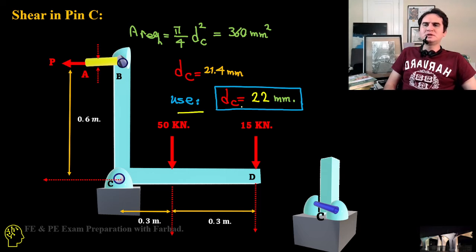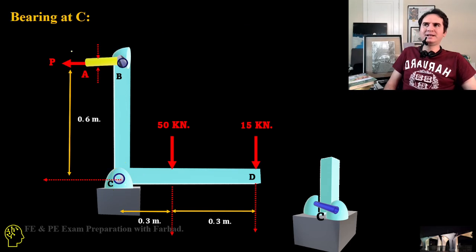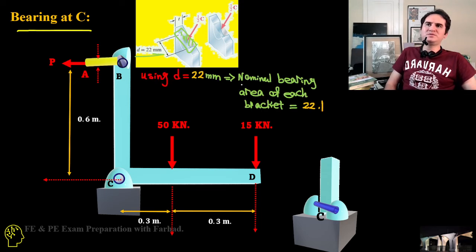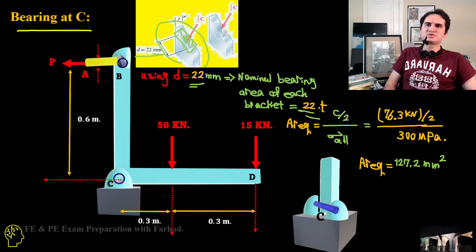That was the second part. Bearing stress at C is also applied at this area with thickness T and diameter calculated to be 22 mm. This rectangular area, half of C due to double shear, is going to handle the bearing stress. Using D equals 22 mm, nominal bearing area of each bracket is 22 times T as we discussed.